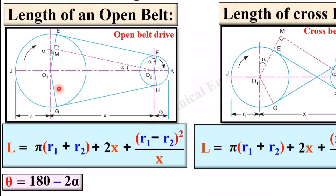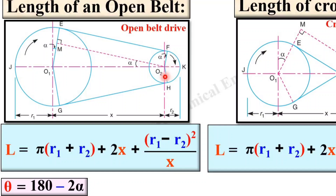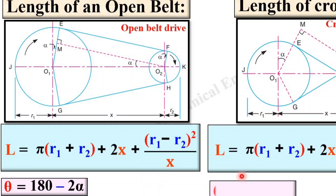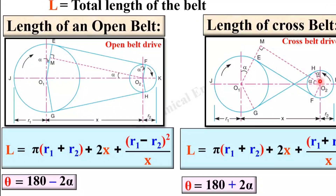Theta is the contact angle, and that is always at the smaller pulley. In case of open belt drive, theta is equal to 180 minus 2 alpha. From this figure you can understand the total angle is 180 minus 2 times alpha, giving the contact angle for open belt drive. In case of cross belt drive, theta is equal to 180 plus 2 alpha, as you can understand from this figure.